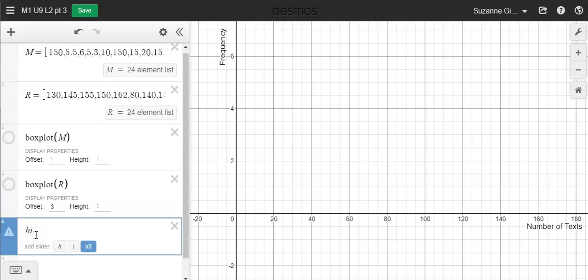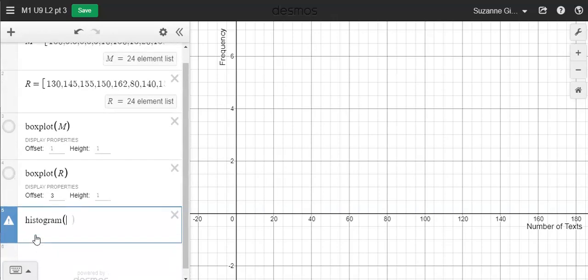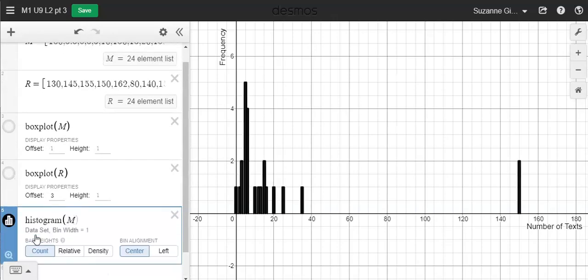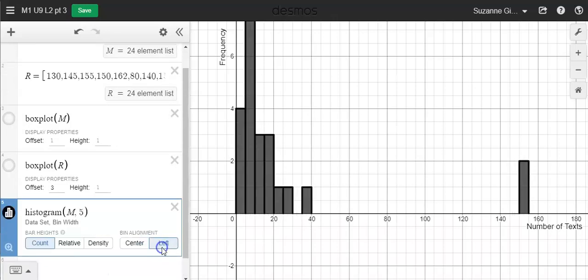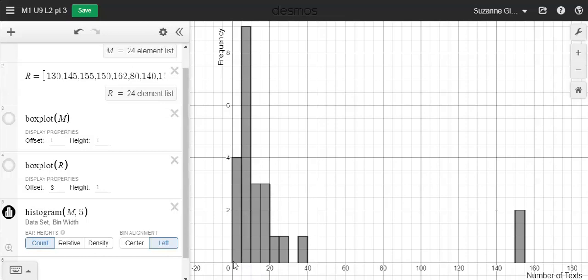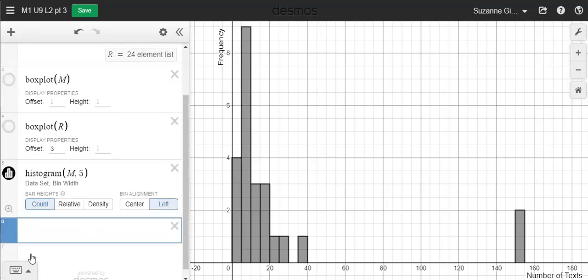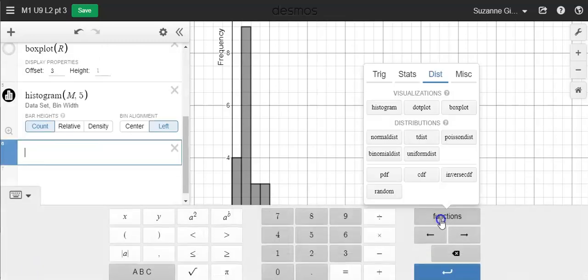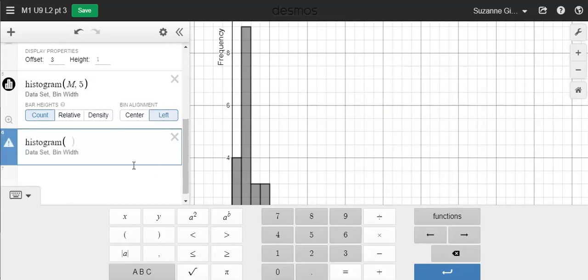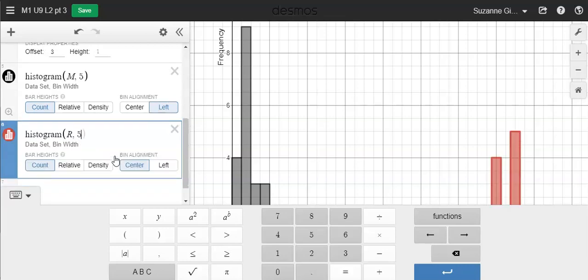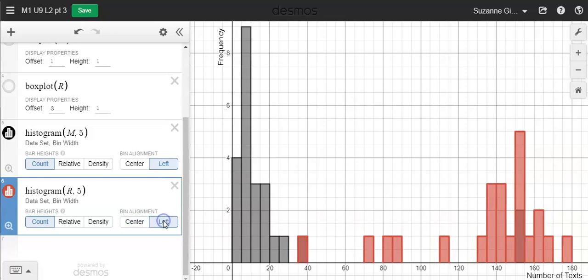All right, so next I'm going to do the histogram. Just like with the box plot, I can just type in the word histogram, and I'm going to do the mom's data first. And the bandwidth, that's how wide you want your bars to be. I'm going to set mine to five, which means it's really counting by fives. I'm going to align to the left. So this first box right here is including data from zero to four texts. This next box is including data from five to nine. And so it's counting by fives set to the left.